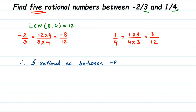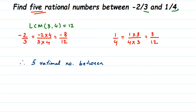Therefore, 5 rational numbers between minus 8 by 12 and 3 by 12. Note that minus 8 by 12 is equivalent to minus 2 by 3, so you can write either form. Similarly 3 by 12 is equivalent to 1 by 4. So 5 rational numbers between minus 2 by 3 and 1 by 4 are — pick any 5. I'll start with minus 7 by 12.